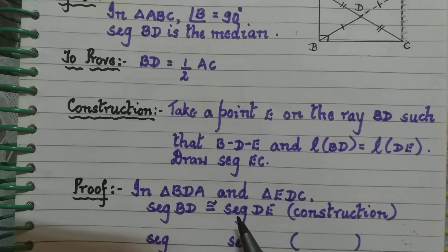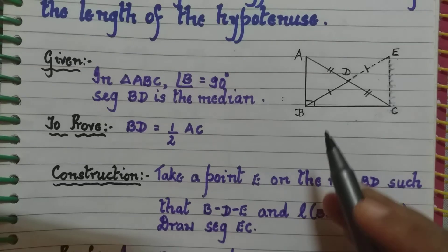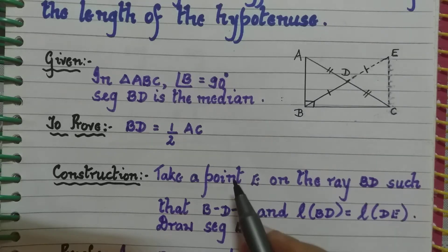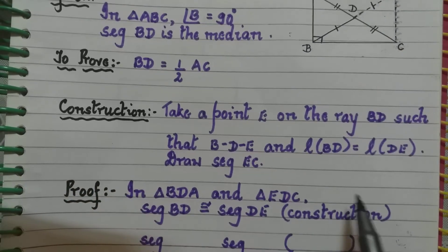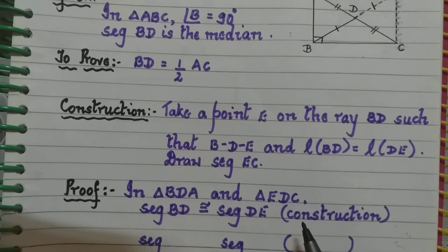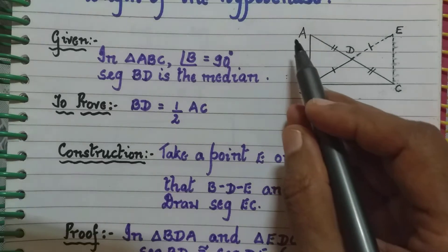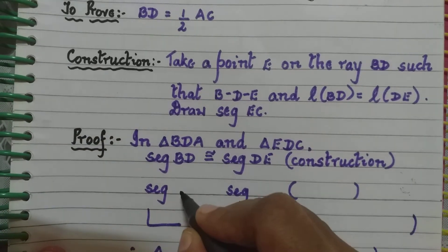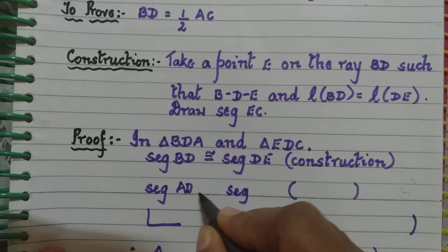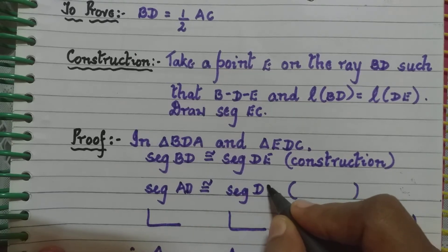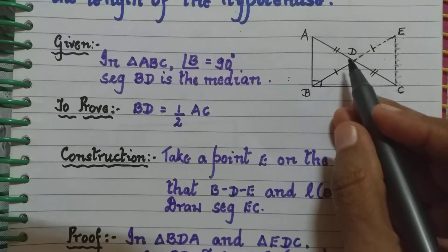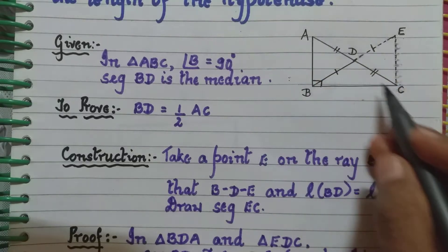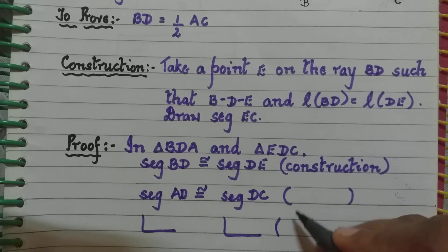Segment BD is congruent to segment DE — that is from construction. Segment AD is congruent to segment DC — that is given, because BD is the median and the median divides the side into two equal parts. And angle BDA is congruent to angle EDC by vertically opposite angles.